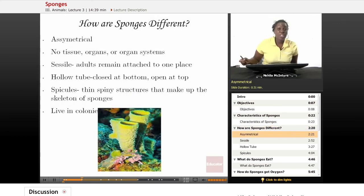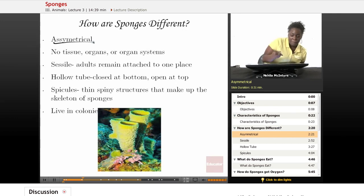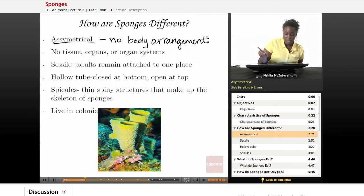So how are sponges different? Well, they're different from other animals because they have asymmetrical body symmetry. Asymmetry just means that there's no specific body arrangement, no body arrangement. They can look any shape or size. They, again, have no tissue, no organ or organ systems.